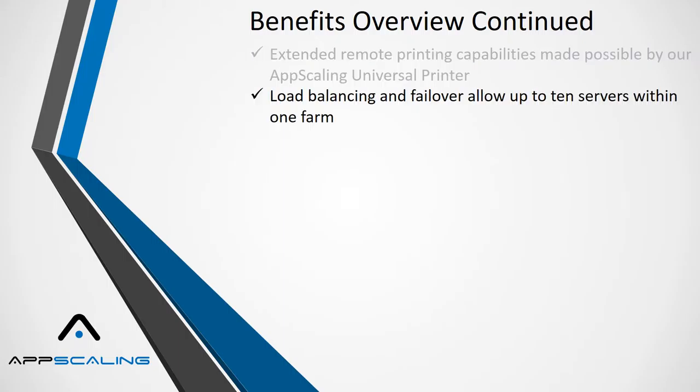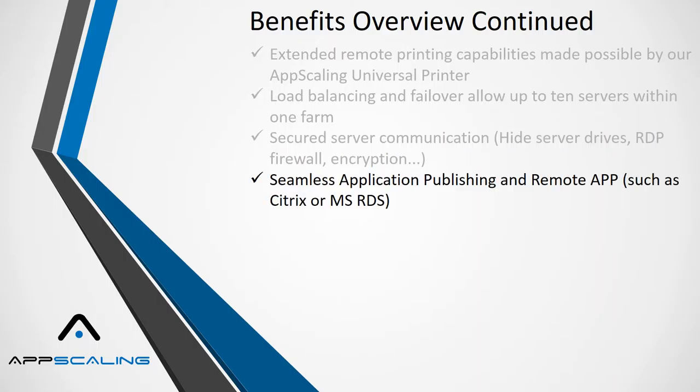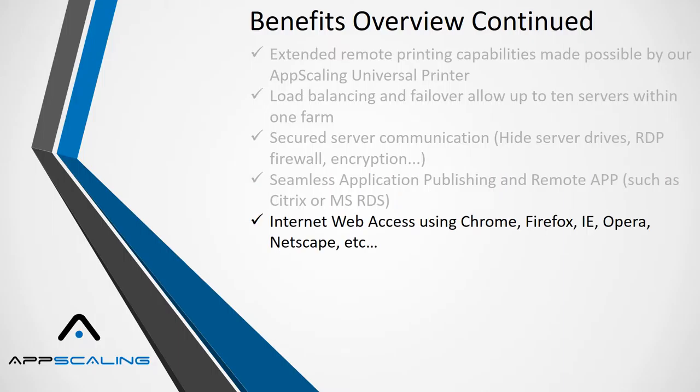Extended remote printing capabilities made possible by App Scaling's universal printer. Load balancing and failover allow up to 10 servers within one farm. Secured server communication includes hide server drives, RDP firewall encryption.